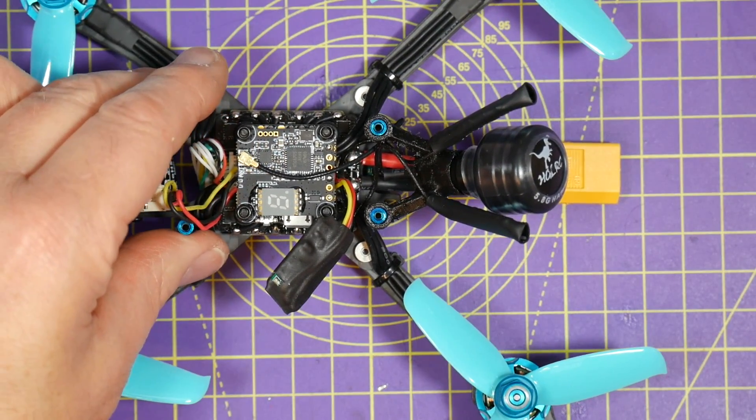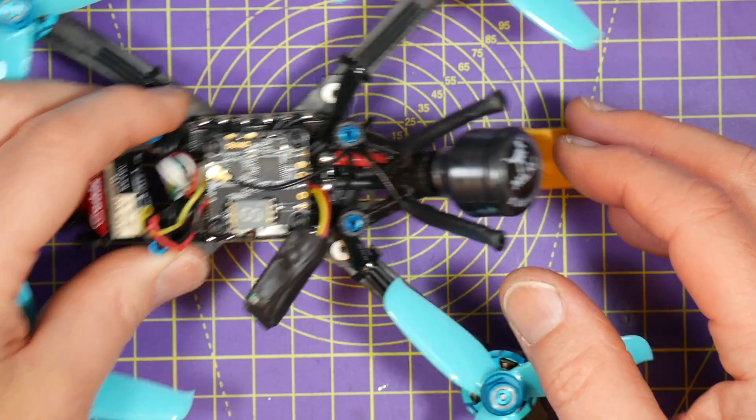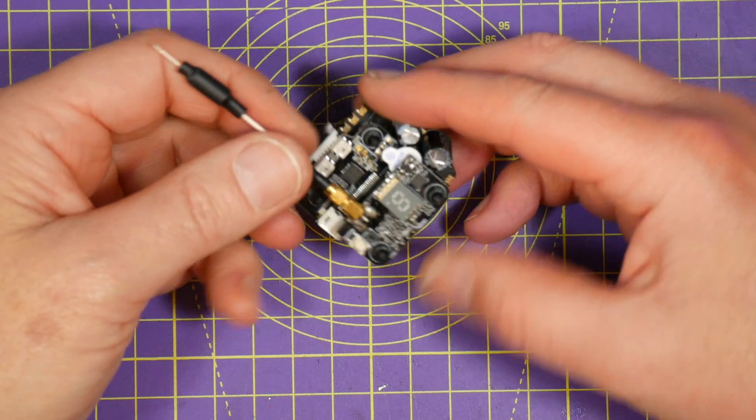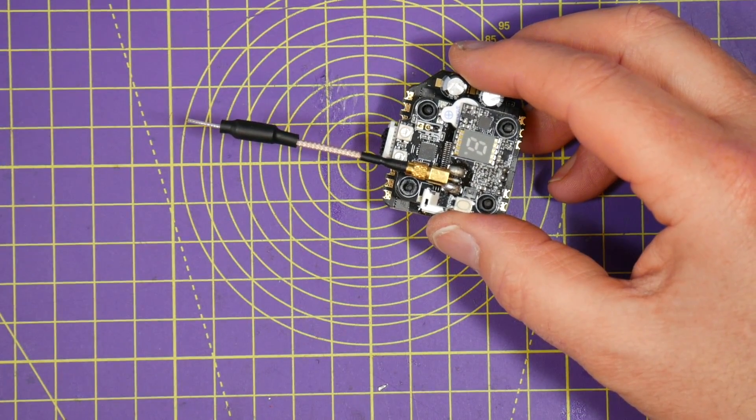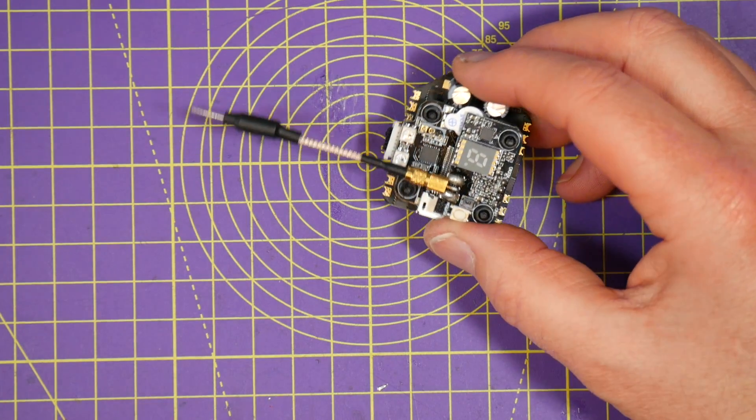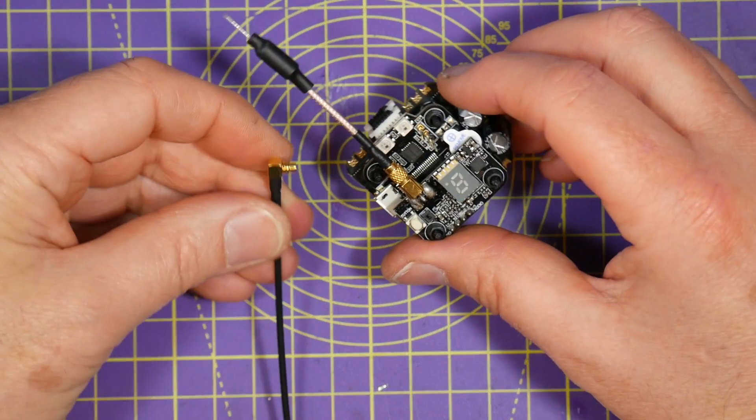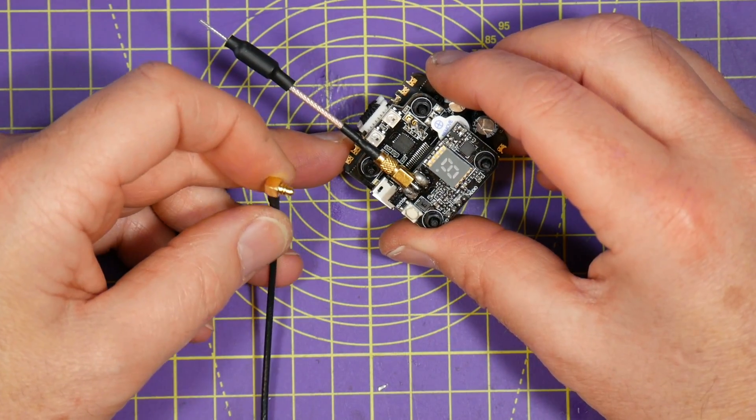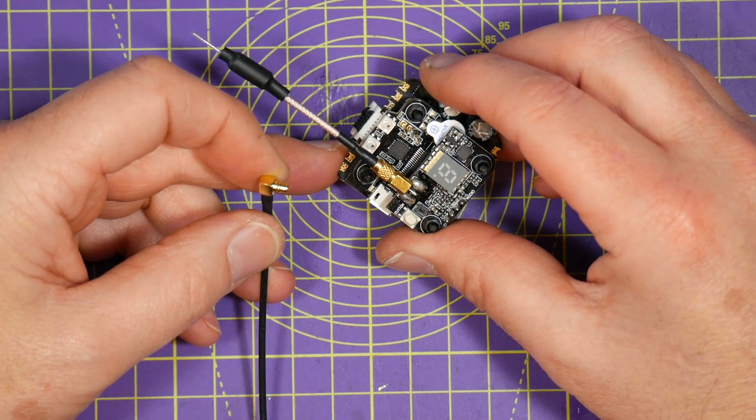Now if SMA connectors are too big and UFL connectors are too fragile, what you need is MMCX. I'll get a few examples of those. Here we go. There's one over here. These are gaining popularity because they're a good compromise of weight, durability and cycle rating.